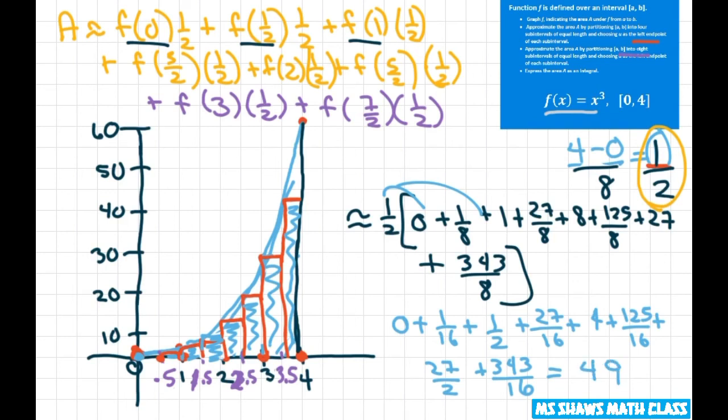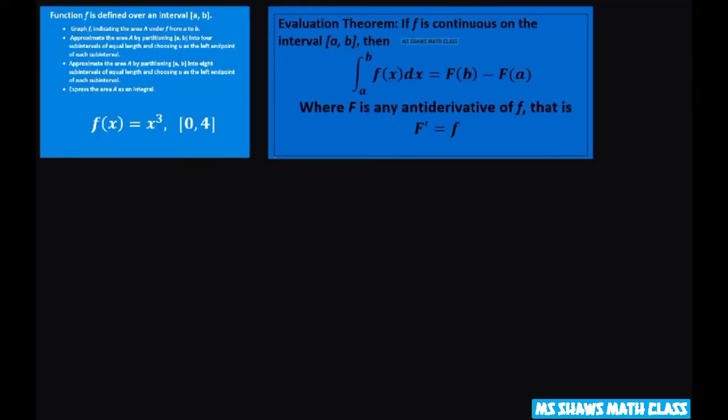All right now let's do the integral. So to do the integral we're just going to write this area as an integral. So that means you write the integral sign going from 0 to 4, our integrand is x cubed, put parentheses around it and then do dx. Now we're going to use our evaluation theorem and find the anti-derivative of x cubed and that's going to be our F and then we're going to do F of 4 minus F of 0.